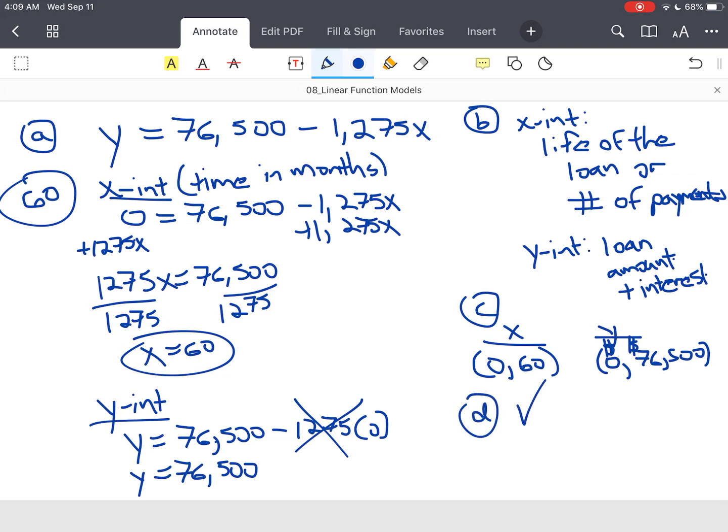And then E, find the slope. The slope is simply what you're paying down every month. So now we could use the intercepts, but they gave it to us. We know we're making $1,275 payments each month. And that's an application of equations of lines and slope intercept form.